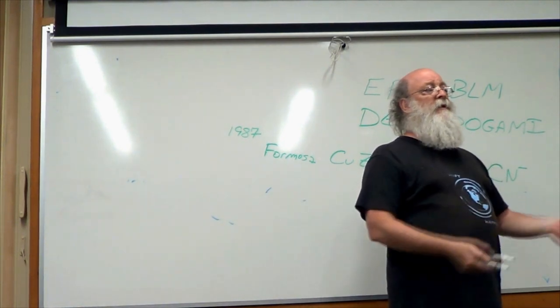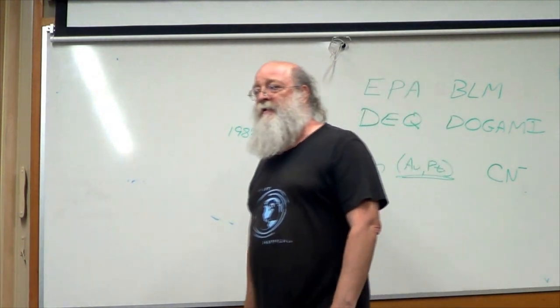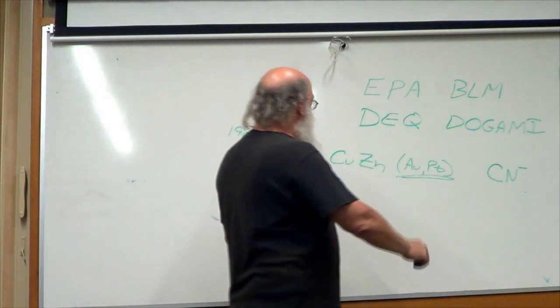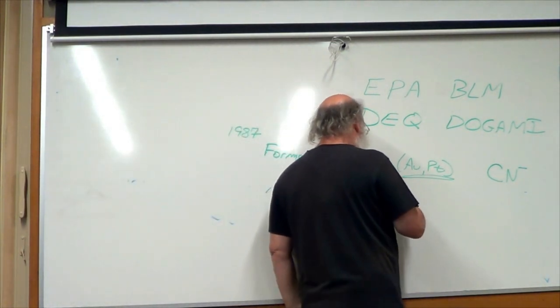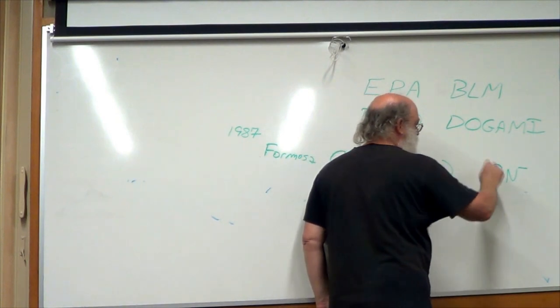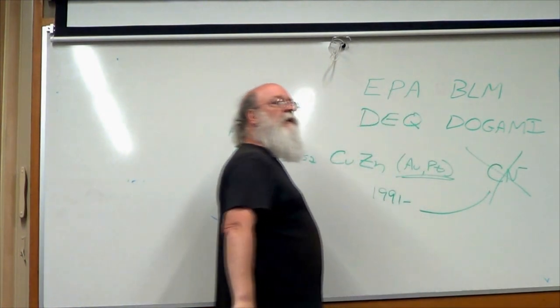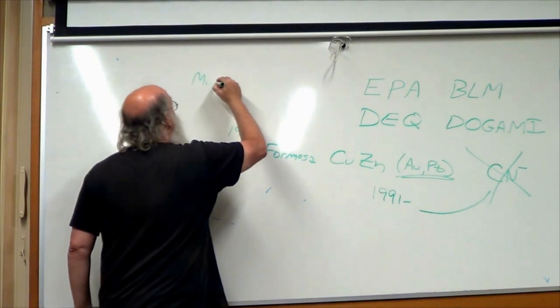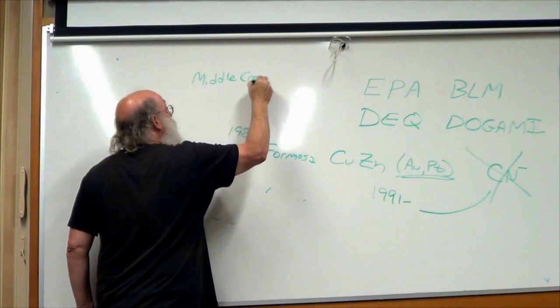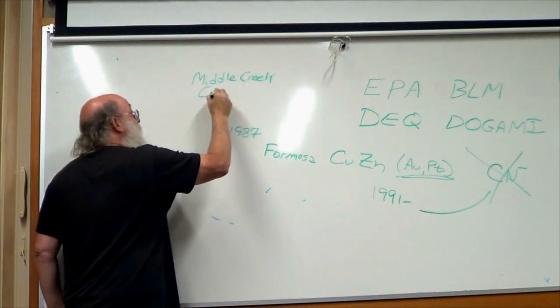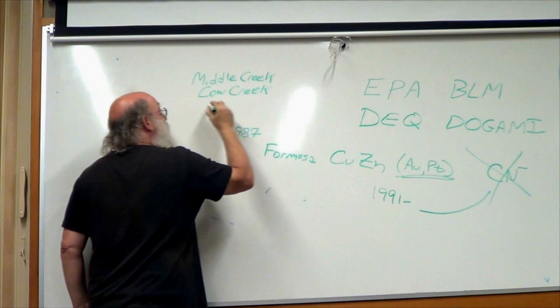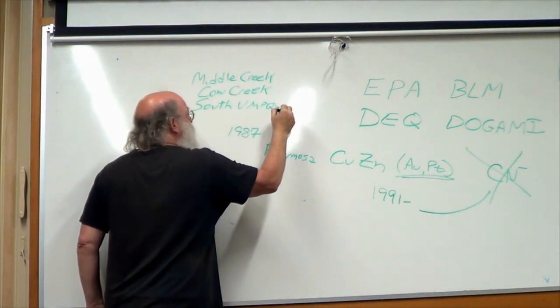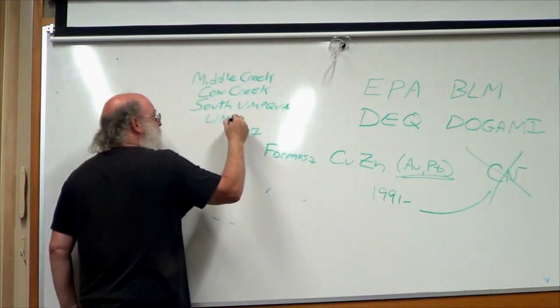And these companies would send the cyanide down the stream and kill all the fish and do crummy things and not really behave. So in 1991, the state of Oregon said no, no cyanide leaching. This is called Middle Creek, and Middle Creek leads into Cow Creek, and Cow Creek feeds into the South Umpqua, and the South Umpqua dumps into the main Umpqua.